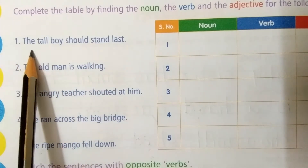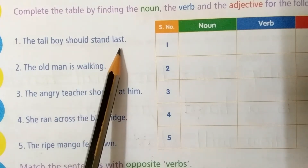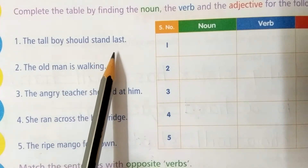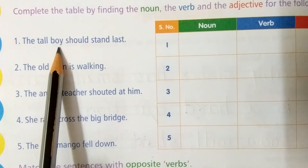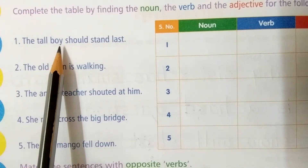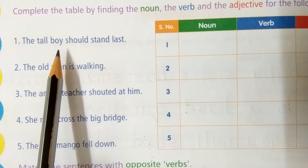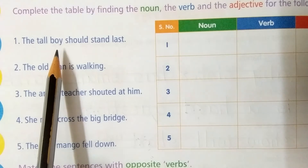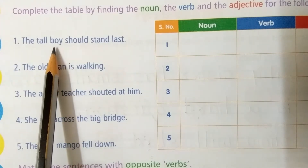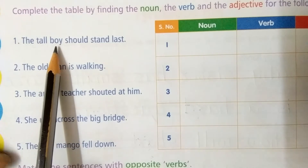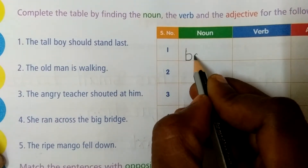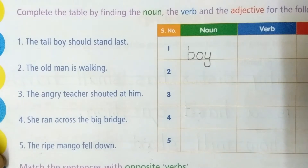The first sentence is: 'The tall boy should stand last.' What is the noun here, children? Any naming word? It is a common noun, not a proper noun — a particular name is not given here. The common noun here is 'boy.' Write down 'boy' in the noun's place: B-O-Y.